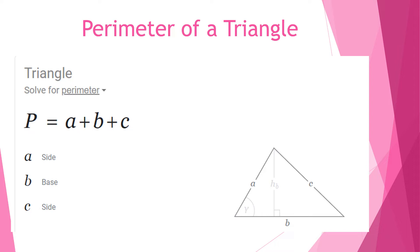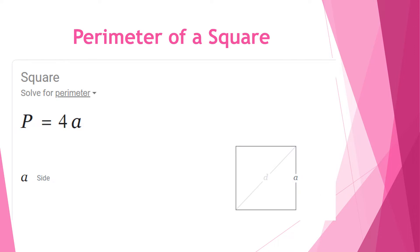Our next formula is to find the perimeter of a triangle. To find the perimeter of a triangle we have to use the formula P equals a plus b plus c, where a represents one side, b represents the base, and c represents the other side — so two sides and one base. You can also see it in the illustration.